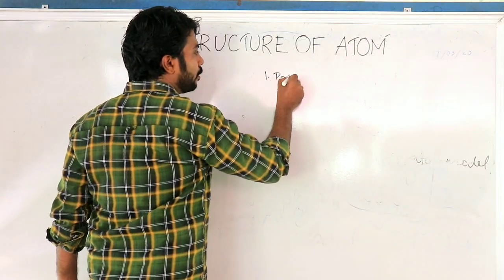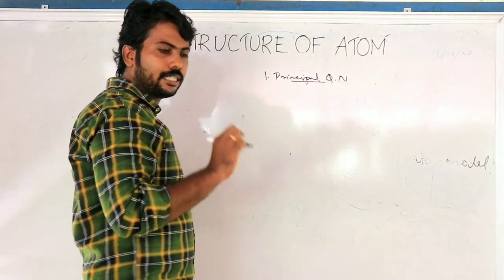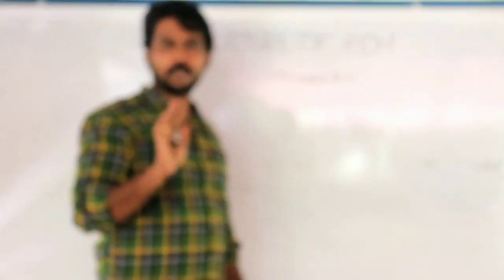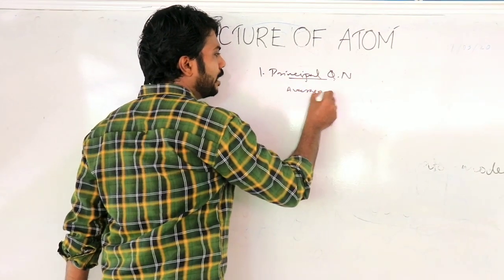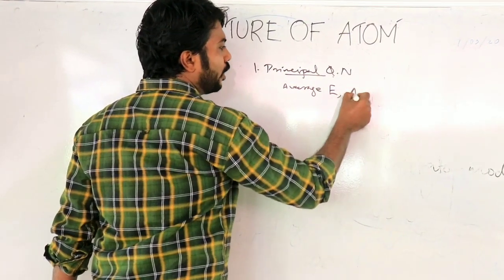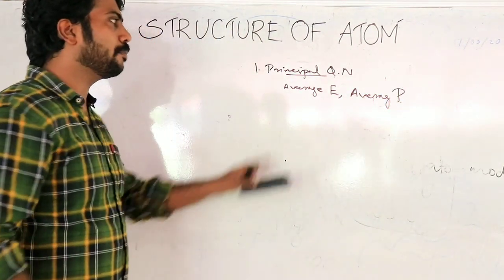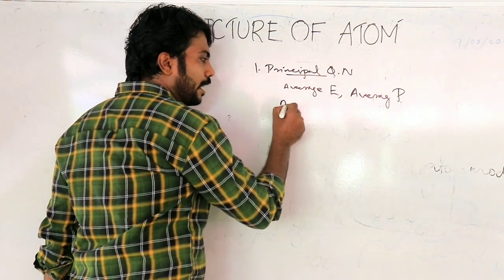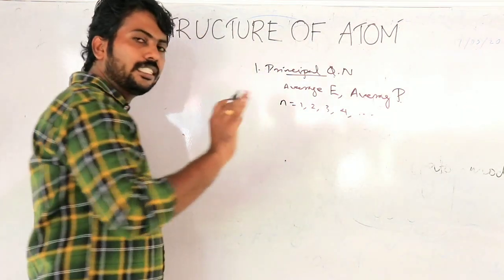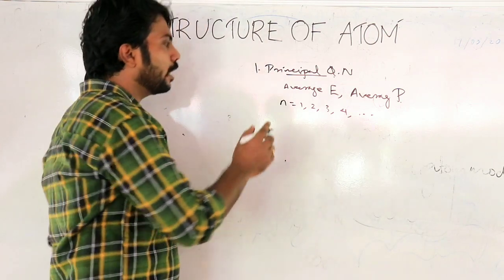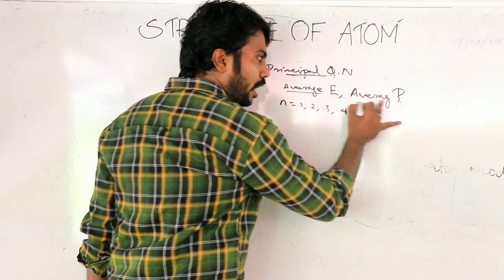The first is the Principal quantum number. In one sentence, it defines the average energy and average position of an electron. The value of n is equal to 1, 2, 3, 4, etc. This represents the number of shells.